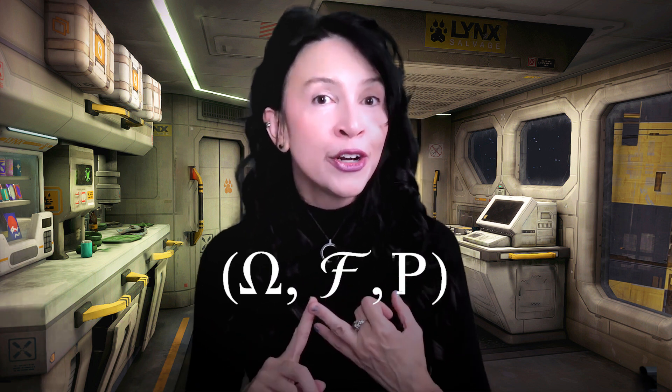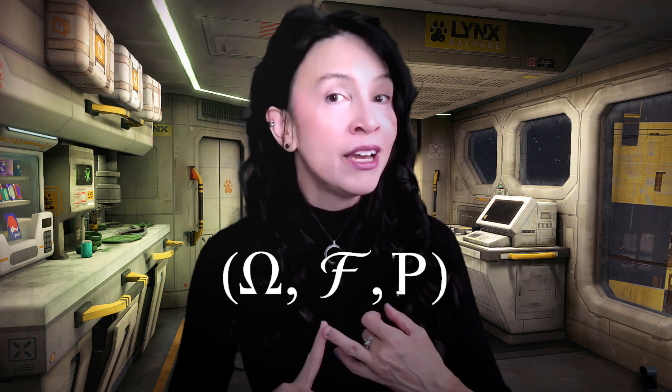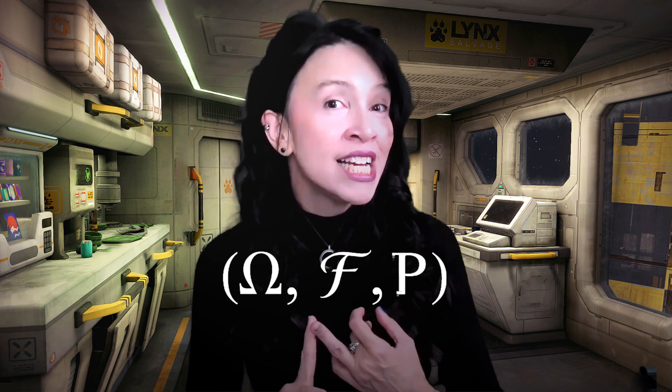Overarching everything, as usual, we have a probability space. We have a non-empty set omega, we have a sigma field curly F consisting of subsets of omega with nice properties, and we have a probability measure P that takes in sets in curly F and spits out numbers between 0 and 1. That is implicit in every definition and theorem I want to talk about today. Let's jump right in with the definition of a tail sigma field.